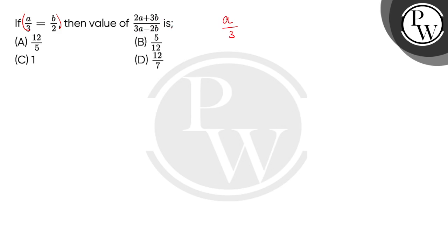Given in our question, a by 3 equals to b by 2, we can write something like this: a by b equals to 3 by 2.